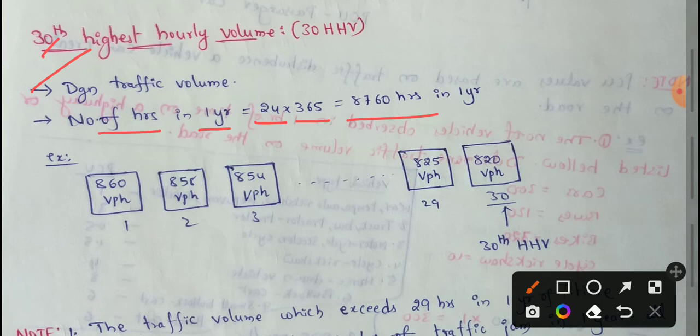In one year, we have 8,760 hours. In this 8,760 hours, 29 times in one year, 29 times actual volume that will exceed.